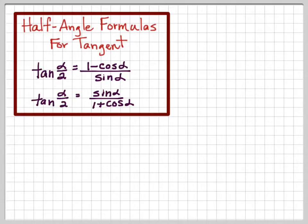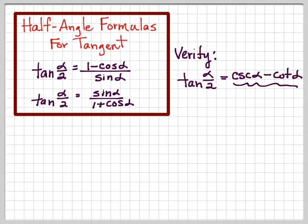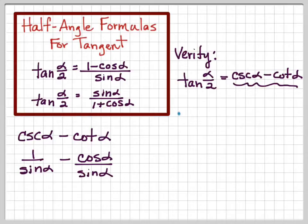So here's your next two formulas to memorize. If I want to verify tan(α/2) = csc α - cot α, I'm going to work with the right-hand side. One of our strategies from section 6.1 was to change everything to sine and cosine. So this would be 1/(sin α) - cos α/(sin α).